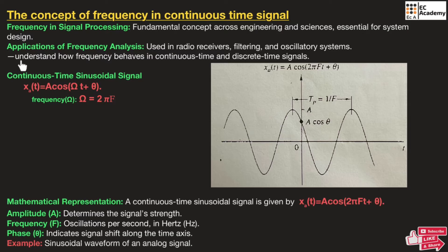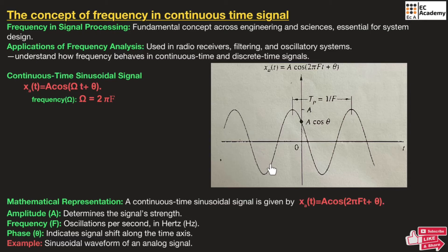Let us understand how frequency behaves in continuous time and discrete time signals. In this video, we will specifically understand how frequency behaves in continuous time signals. This is an example of a continuous time sinusoidal signal with time period Tp and amplitude A.